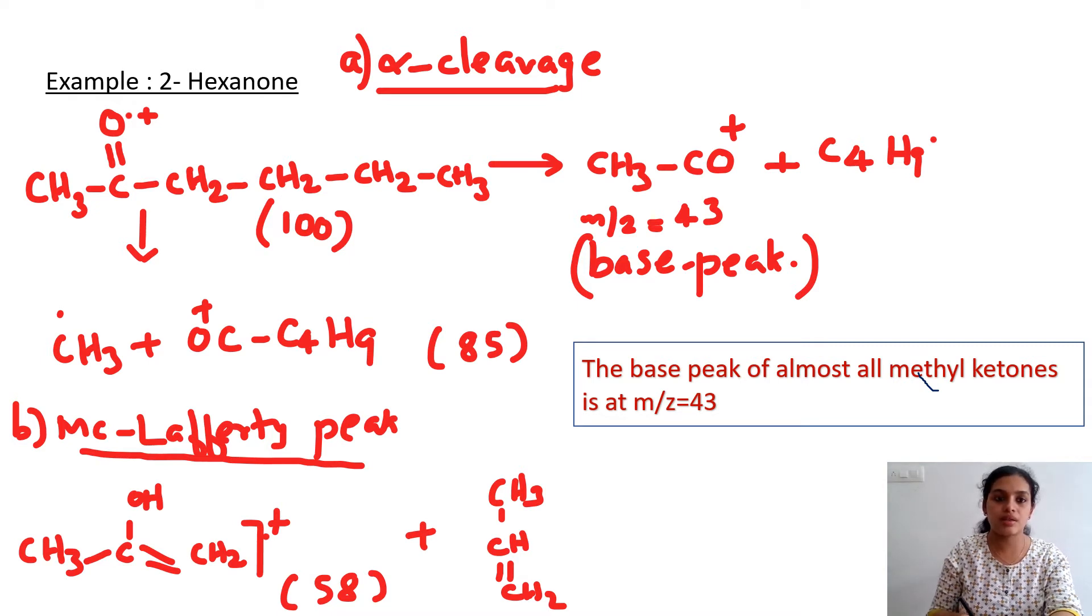So to get that fragment, the fragmentation would have occurred here to give you C4H9 dot and the remaining CH3CO+. And in the second fragmentation, that one would have occurred here to give CH3 dot and the resulting cation at m/z 85.